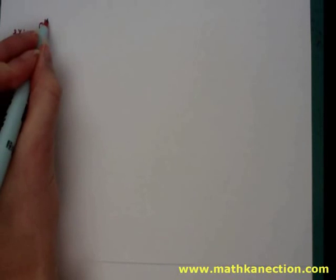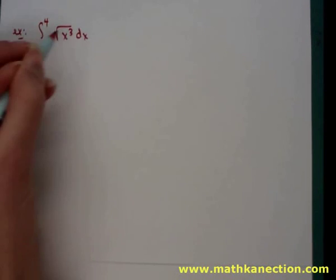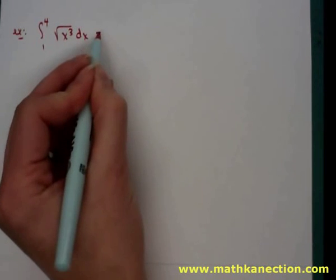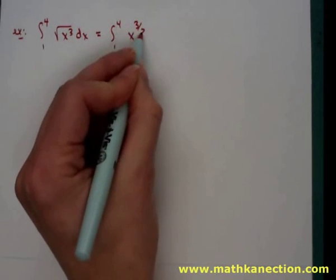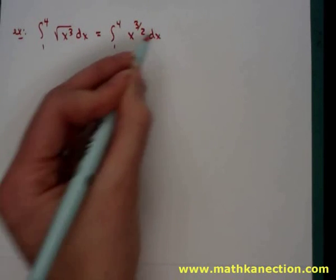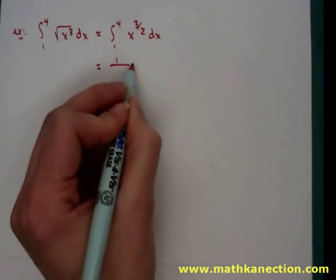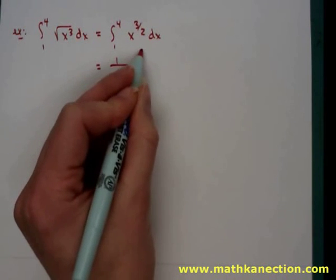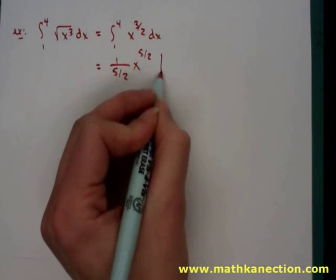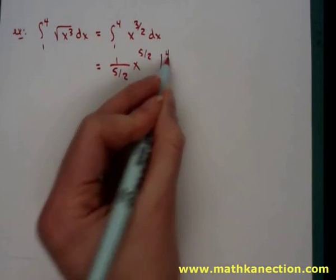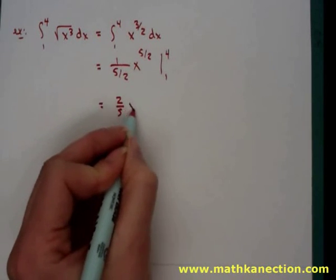For our second example, we'll evaluate the integral from 1 to 4 of the square root of x cubed dx, rewriting the problem to read x to the three-halves. Taking the antiderivative, we get 1 over five-halves times x to the five-halves, evaluated from 1 to 4. We don't need the plus c because the constants cancel out.